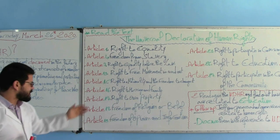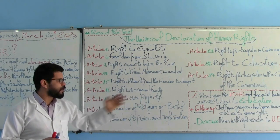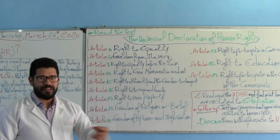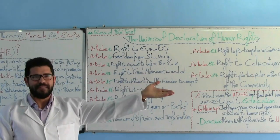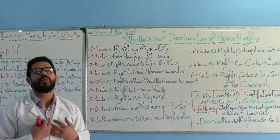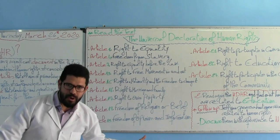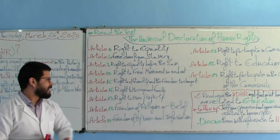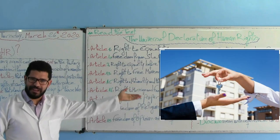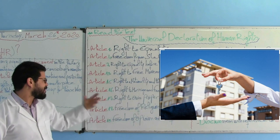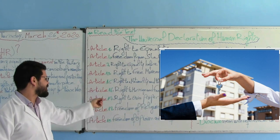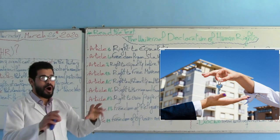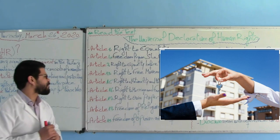Article number 17: Right to own property. I have the right to buy a car. You have the right to buy a flat or a house or whatever. We all have the right to own or possess property. This is the picture that we can use to further explain Article number 17 — right to own and possess property.